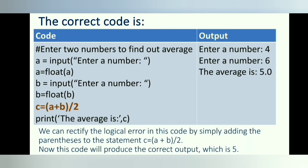The correct code is given below. We can rectify the logical error in this code by simply adding the parentheses to the statement c equals a plus b by 2. Now this code will produce the correct output which is 5.